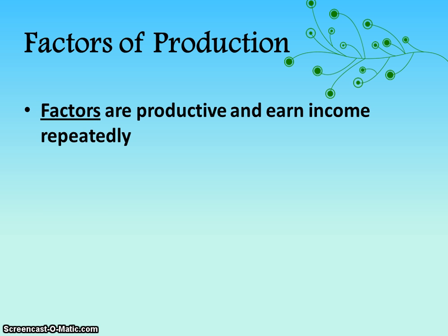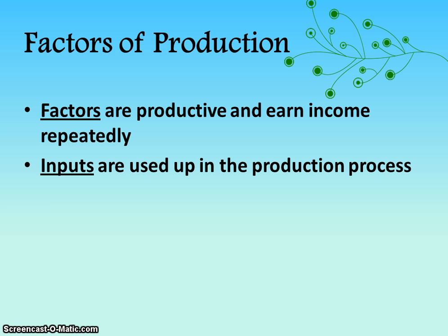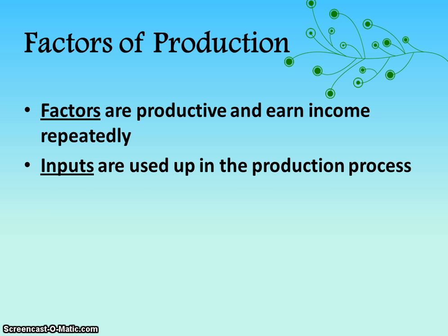Factors are productive and earn income repeatedly, so you can keep using them again and again to keep producing. Whereas inputs are used up in the production process — inputs would be like materials that you use when you're manufacturing, but you run out of them. Factors you can keep using again and again, and factor prices are what determine production.